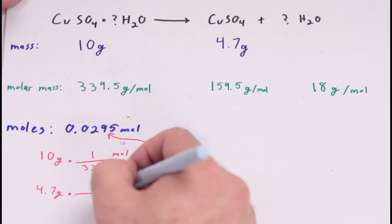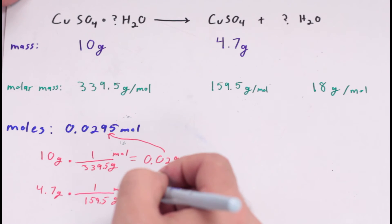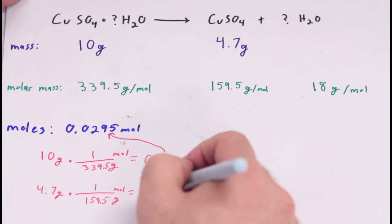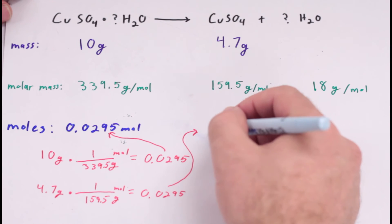Finally, write out the chemical reaction and convert from grams to moles. Then divide your numbers by the moles of copper sulfate to get the exact ratio of water to copper sulfate.